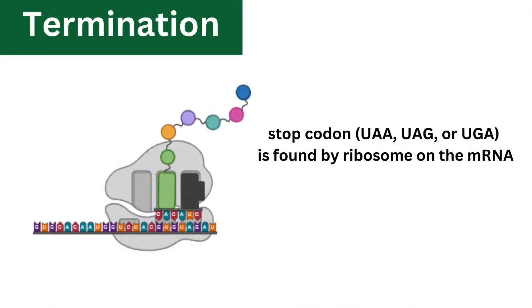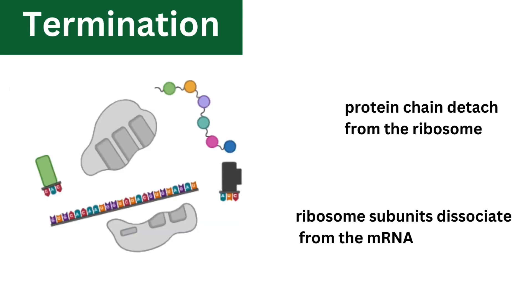Finally, termination occurs when a stop codon is found by ribosomes on the mRNA. The stop codons are UAA, UAG, and UGA. The release factors bind to the ribosome, causing the completed protein chain to detach from the ribosome, and the ribosome subunits dissociate from the mRNA, ready to initiate another round of translation.